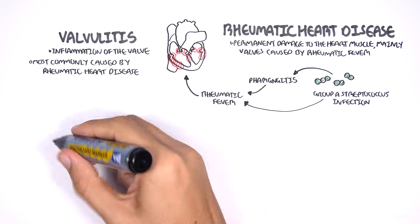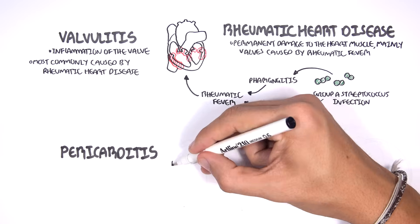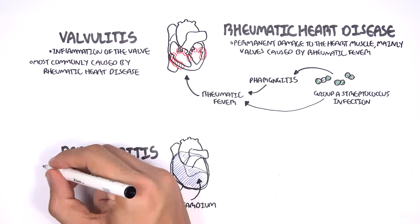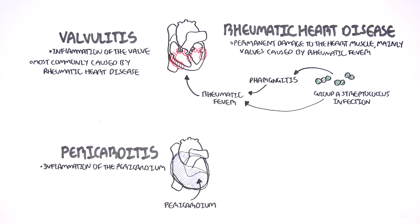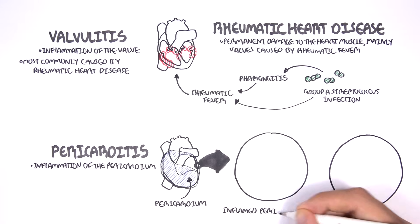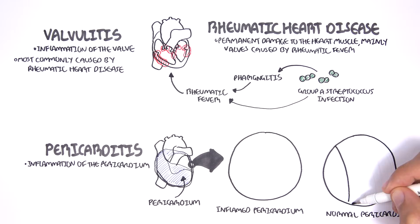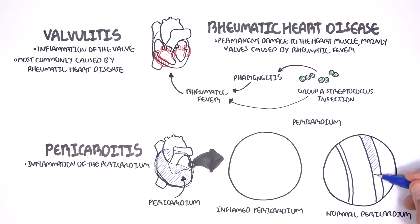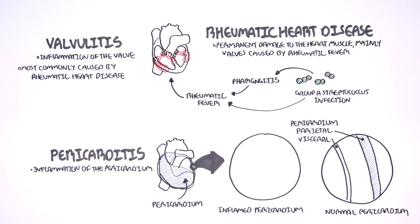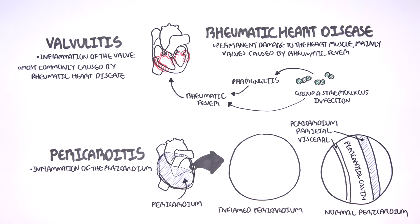The next cardiovascular disease is pericarditis, which is inflammation of the pericardium. The pericardium is a fibrous and serous layer protecting the heart. When normal, it consists of the outer fibrous pericardium, the parietal layer, and the visceral pericardium, which directly surrounds the heart. In between the parietal and visceral layers is the pericardial cavity, which contains pericardial fluid that serves to reduce friction between the pericardium.